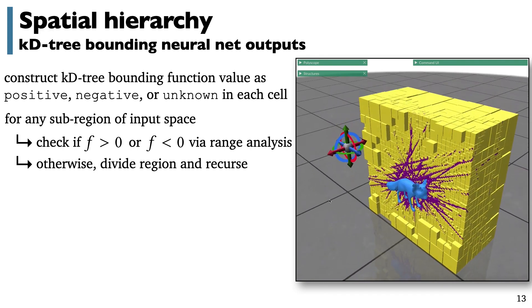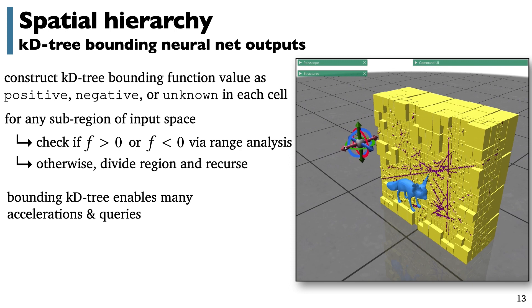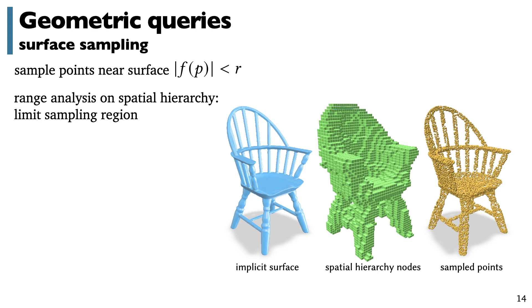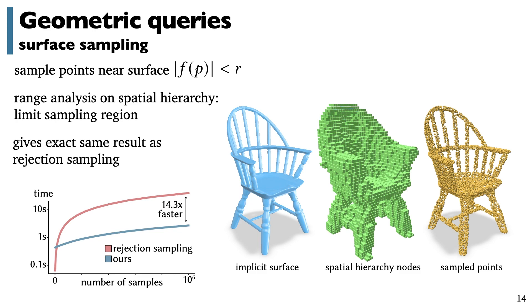This data structure makes it easy to implement a whole range of efficient volumetric queries, all following standard procedures in geometry processing, but now we're able to do them on neural implicit surfaces. A first common operation is sampling points on or near the surface, which shows up often in geometric loss functions. Here, rather than uniformly rejection sampling from all of space, we can sample only from the nodes of this KD tree which are near the surface. This yields dramatic speed-ups, and importantly, it still yields the exact same result. It's not an approximation strategy, it's just an acceleration.